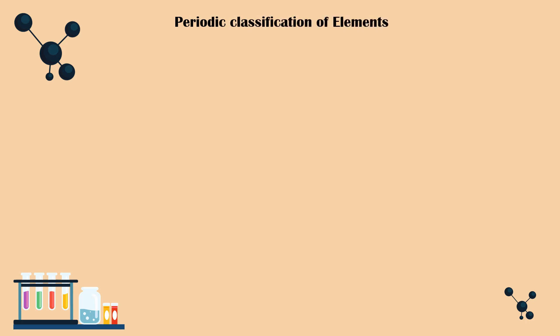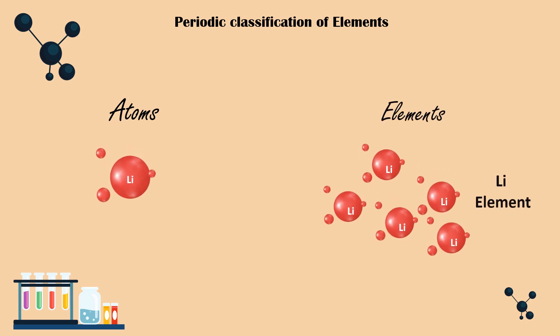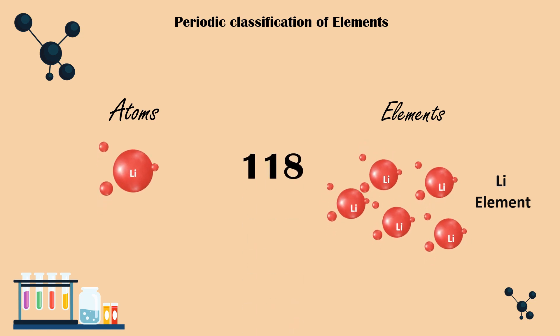Some terms before we start. First is Atoms. Atoms are the basic units of matter. Elements are pure substances that are made up of one type of atoms. There are 180 different elements discovered till today. Yes, and you might have to remember all of them.